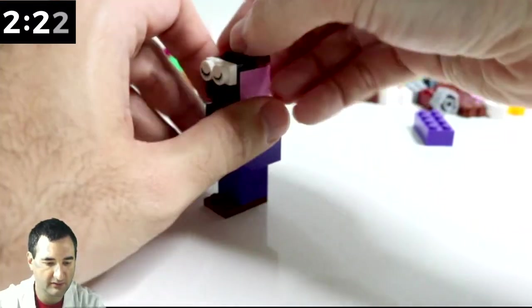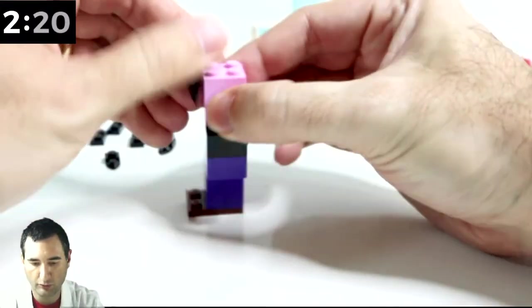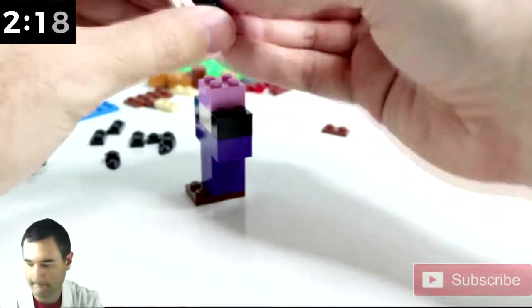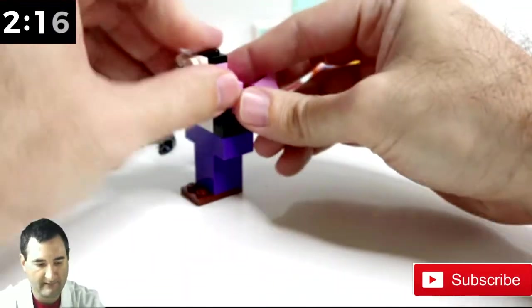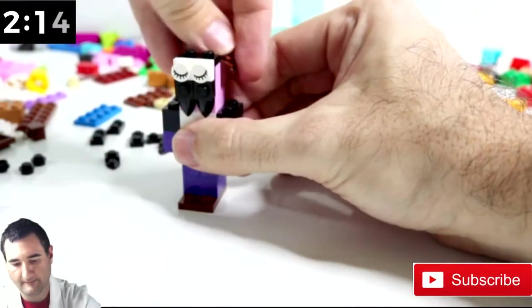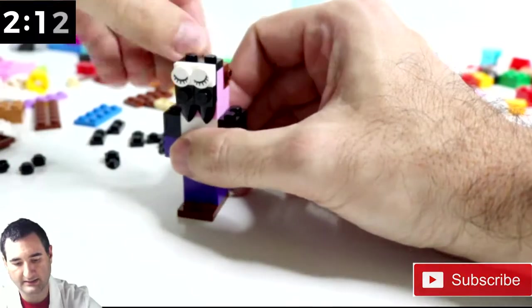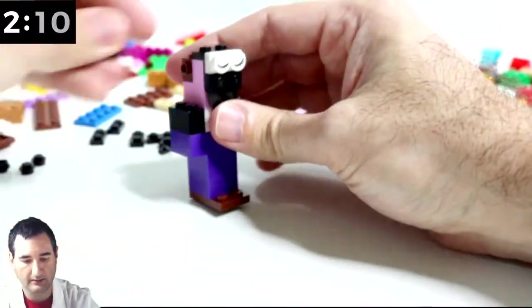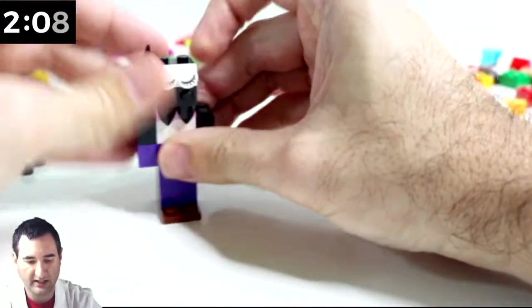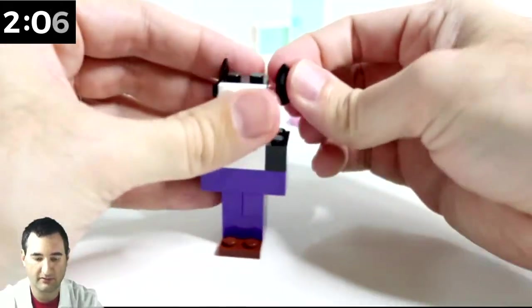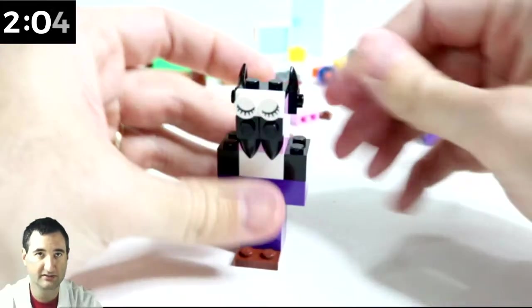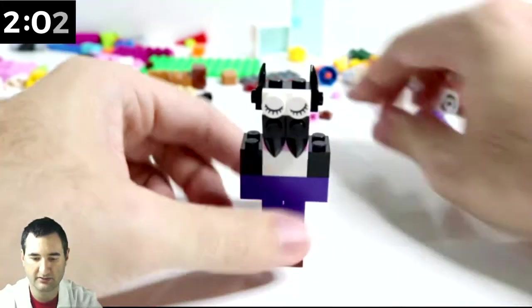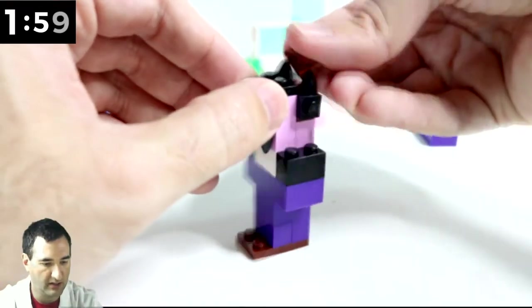Okay what if we do ears? Oh oh oh I got an idea. Do this on the sides and then up these little black pieces for a little stick up ears, like elf ears but Dracula ears. How are we gonna do the top?